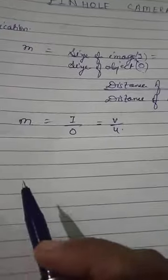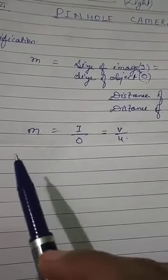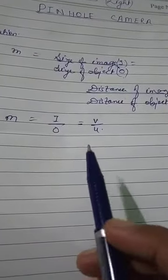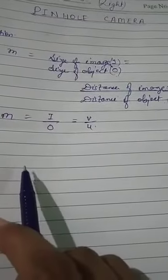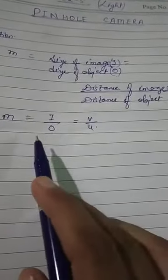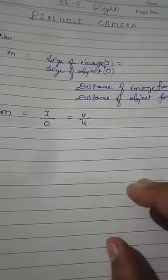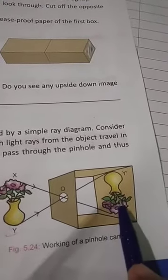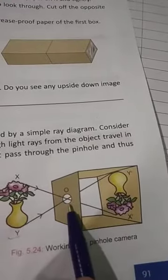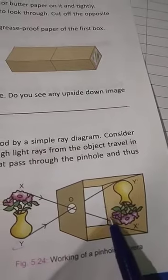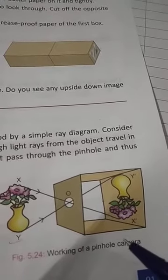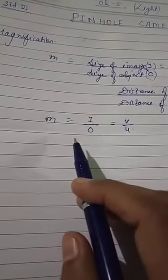Now, what are the advantages of pinhole camera? There are many: we do not need to use any lens — without a lens we can see the image of an object. There is no need for focusing; only the hole should be made at the center. Since no lens is used, the image obtained is free from optical defects like color distortion — you can see a colorful image of the object clearly.